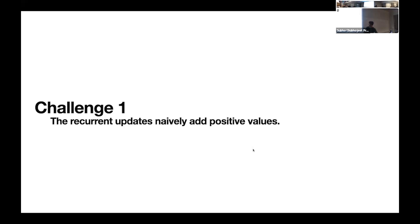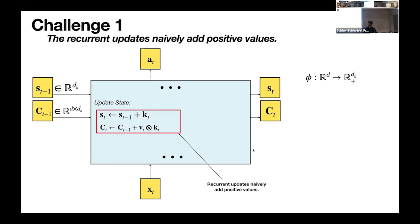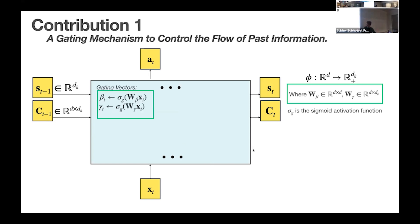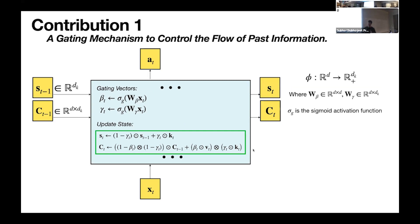For the first challenge — naively adding to the recurrent state — we use a gating mechanism, common in the RNN literature. We introduce new parameters calculated as a function of the inputs and compute gating vectors using the sigmoid function so they output values between 0 and 1. These decide how much past information to keep and how much new information to add, implementing an exponential moving average of past information.